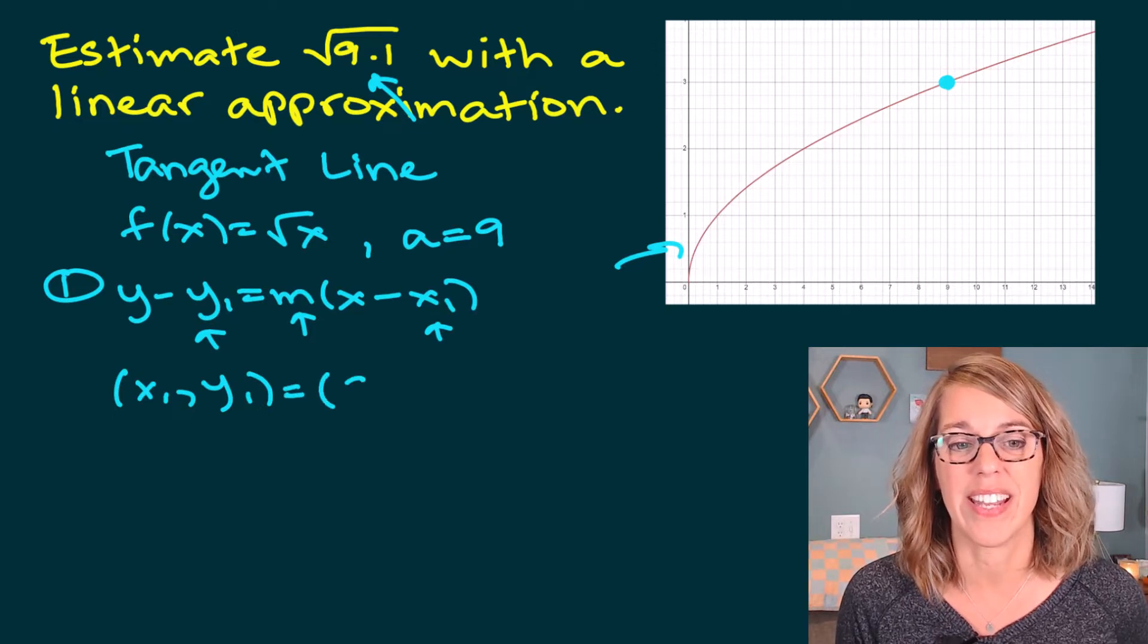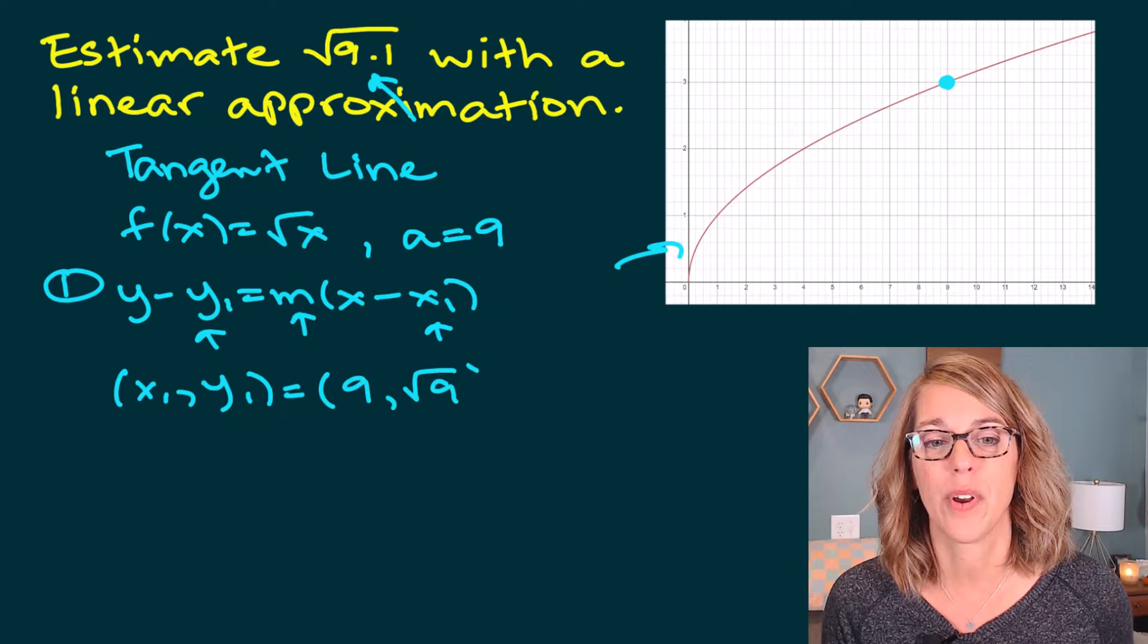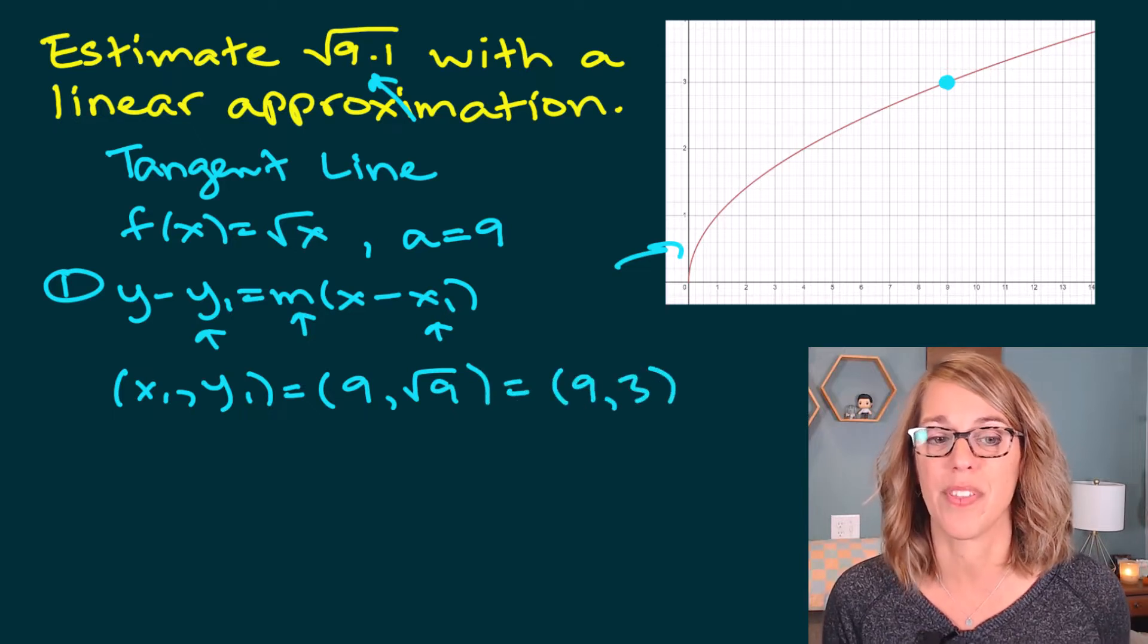So as I'm finding that point x₁ comma y₁, it's going to be at 9 comma my function evaluated at 9, the square root of 9 is equal to 3. So my point is (9, 3).